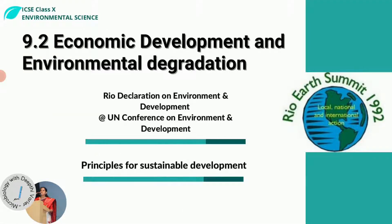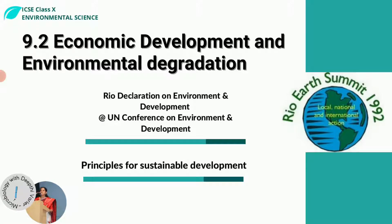When we look at economic development and environmental degradation: environmental degradation is when the environment is getting destroyed little by little, while economic development is related to improving the standard of living of a nation. In 1992, the Earth Summit was conducted in Rio de Janeiro, Brazil — officially called the UN Conference on Environment and Development (UNCED). All countries came out with a document called the Rio Declaration on Environment and Development, which contains 27 principles or guidelines for sustainable development.